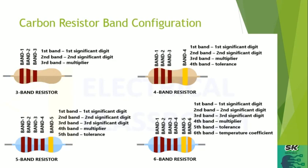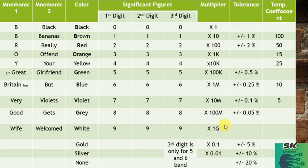In a three-band resistor we have a first significant digit, second significant digit, and a multiplier band. In a four-band resistor there is an additional tolerance band — tolerance means how much error in the value of resistance is allowed. In a five-band resistor we have three significant digits, one multiplier, and one tolerance band. In a six-band resistor there is the addition of a temperature coefficient band, which represents how much the resistor value changes with change in temperature.